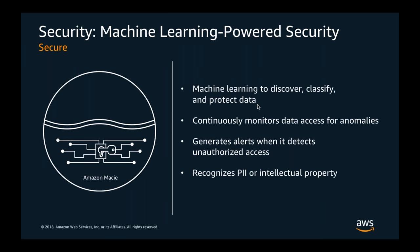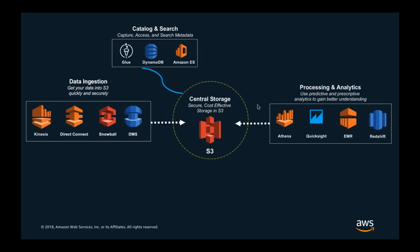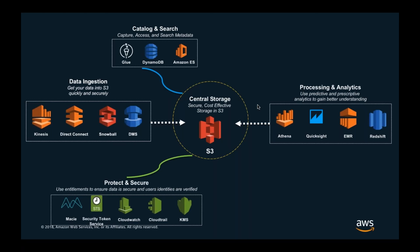Amazon Macie is a machine learning-powered security service that continuously monitors data in your S3 data lake and generates alerts when it detects unauthorized access. It also recognizes PII data — if someone accidentally stores PII data you didn't intend to store, the service can automatically detect and notify you. Many security options are available to protect data in your S3 bucket.